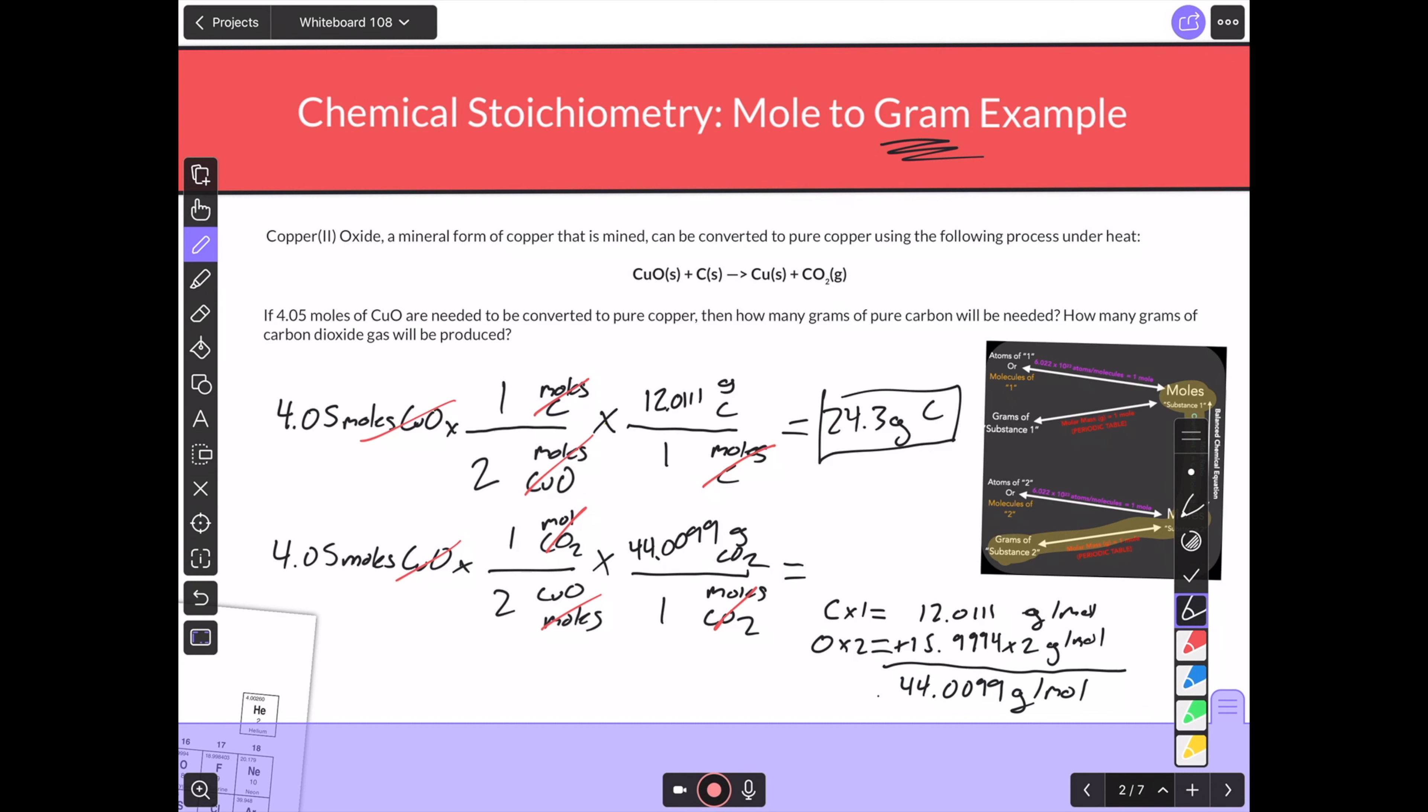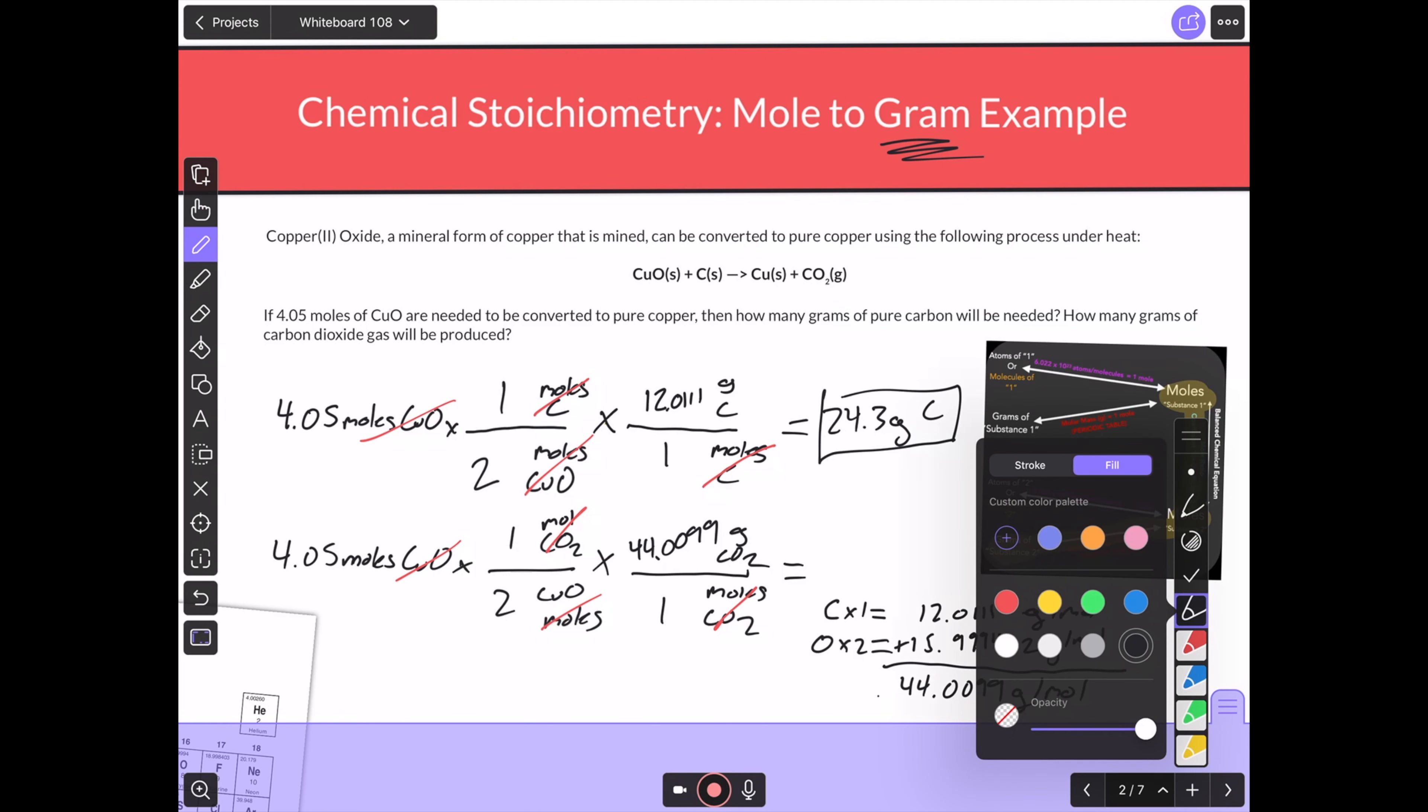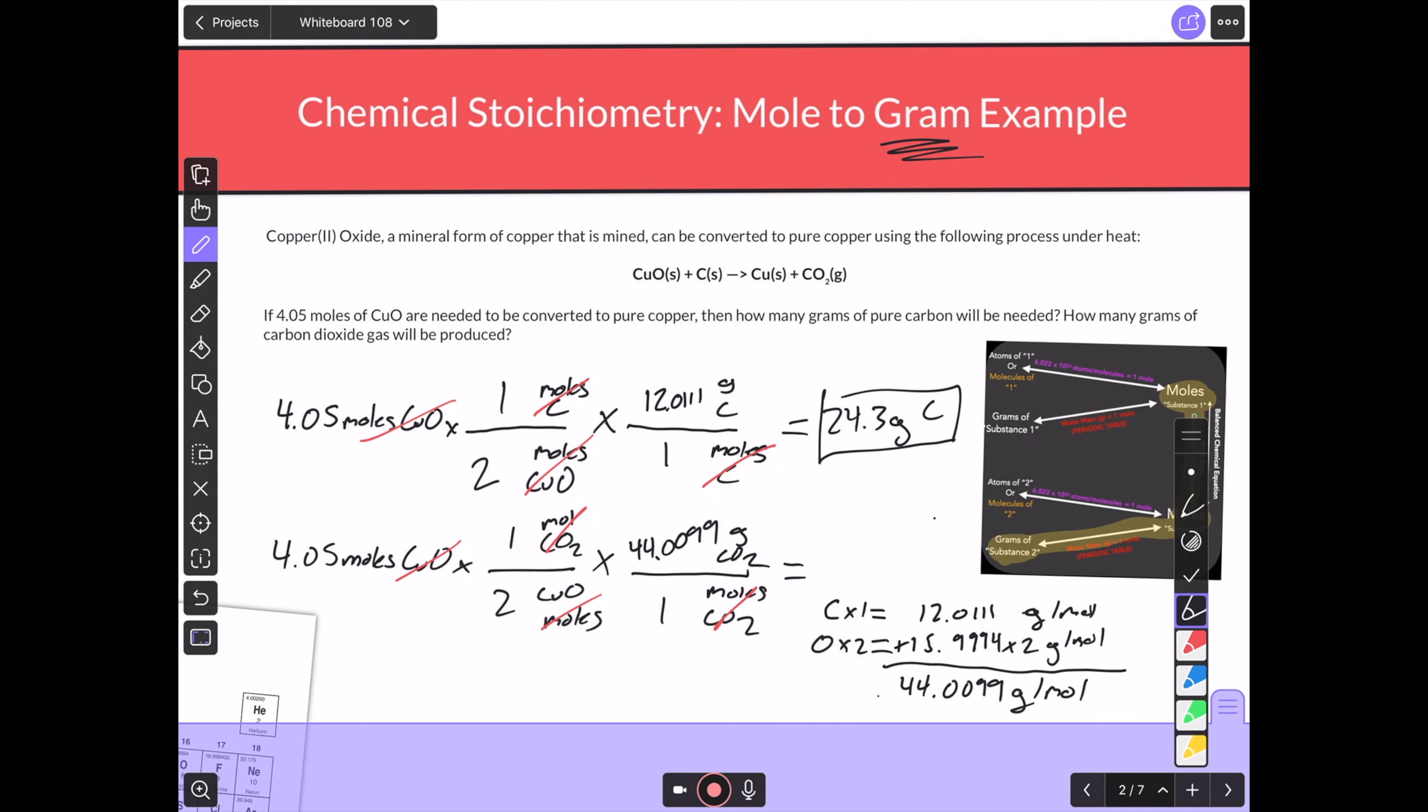And on the bottom, I'm doing similar math. 4.05 divided by 2. This time, we're going to multiply by 44.0099. And again, that's going to be to three significant digits. I get 89.1 grams of CO2.